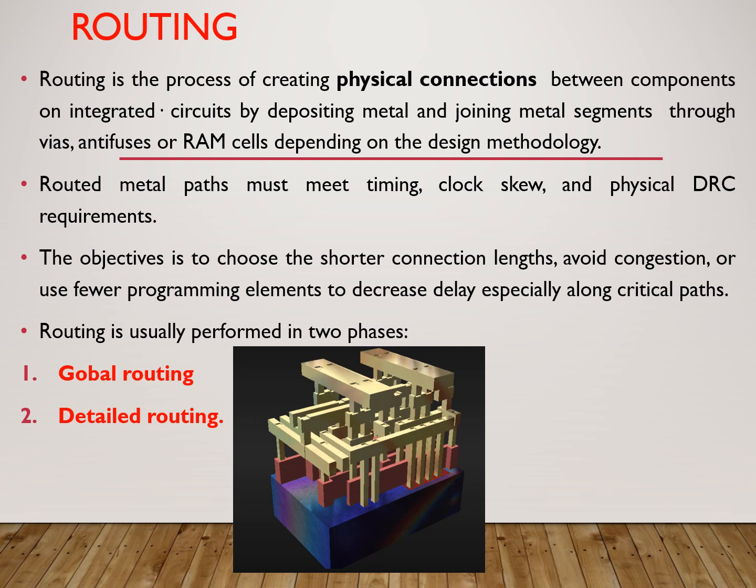Any routed metal path needs to meet some specifications. It has to meet the timing requirements, logic constraints, as well as it has to follow some rules — that is, the design rules. So any routing metal has to follow three things: timing, logic constraints, and design rules checker requirements.